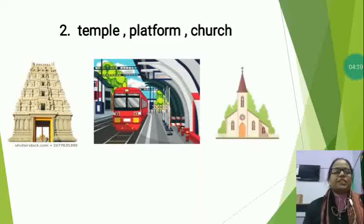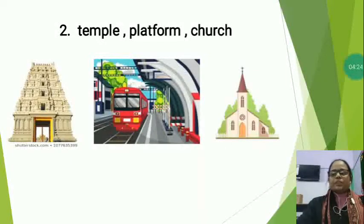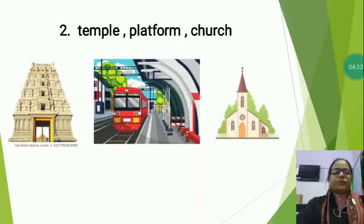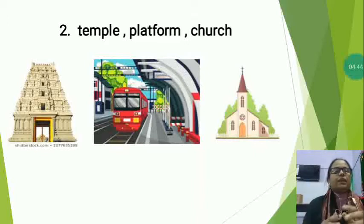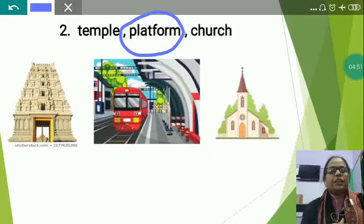Now the next is church. A church is a place of prayer for Christians. So which one is the different? Both temple and church are places of worship, but platform is something you can see at a railway station. So which one is the different? Platform is the different. So you will circle platform.